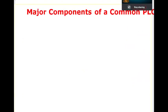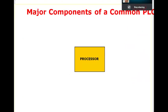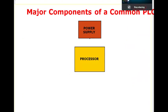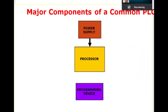The major components of a PLC are: the processor — which is the brain of the PLC, just as the PLC is the brain of automation; the power supply — every electronic device needs power; the programming device — the computer used to program the PLC.